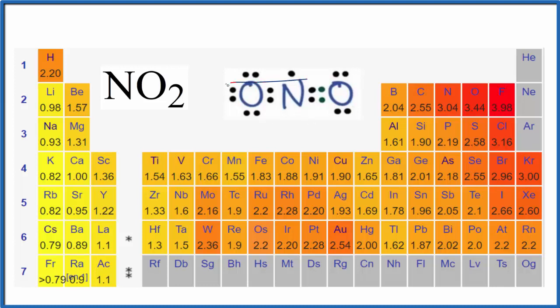First though, let's just look at the nitrogen and the oxygen. If we have a bond between nitrogen and oxygen, nitrogen is 3.04, oxygen 3.44. So there is a difference in electronegativity.